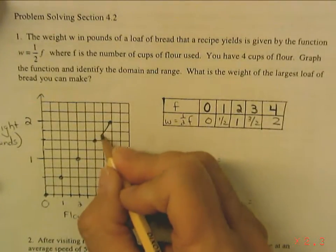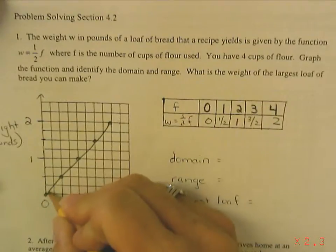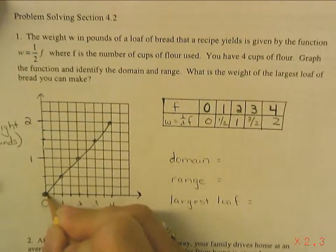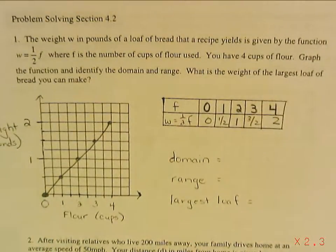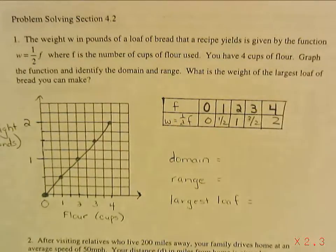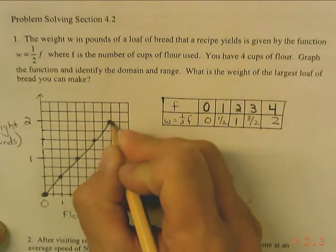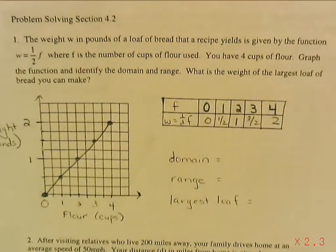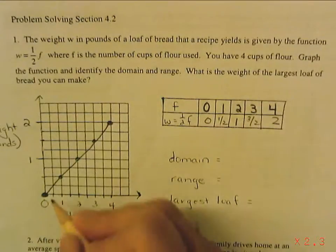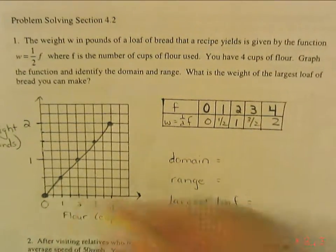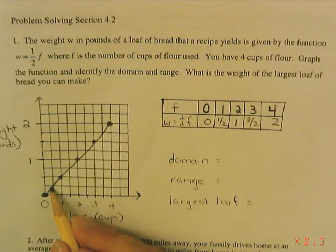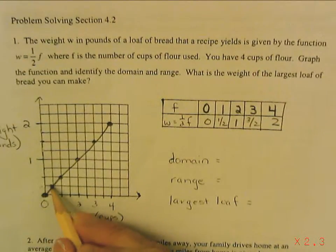Now, because I already discussed it was continuous, I'm going to connect them. Now it can't go below zero because you can't have negative cups of flour, and it can't go above four cups because that's all you have. But I can connect them because in between I could do half a cup of flour, which would weigh a quarter of a pound.